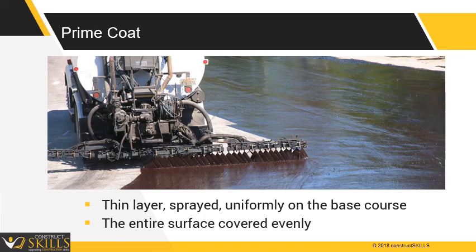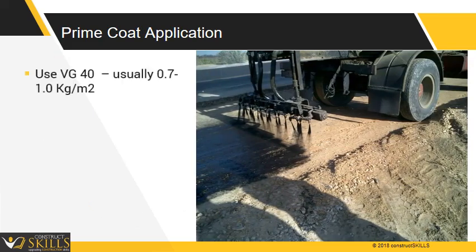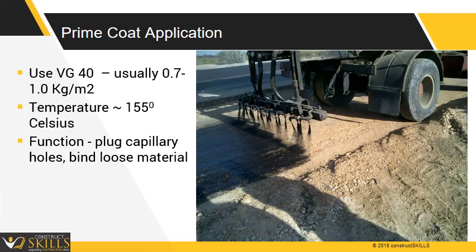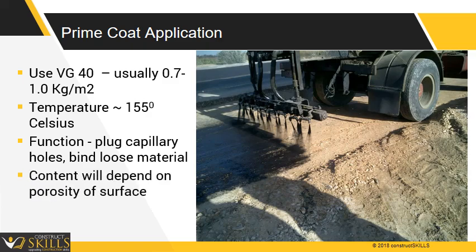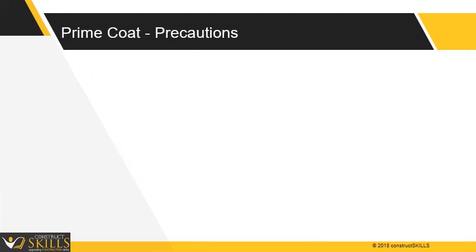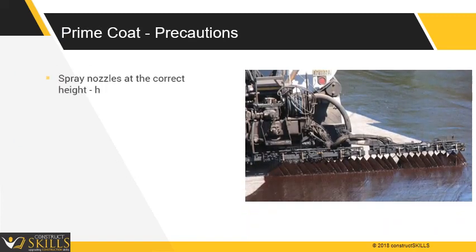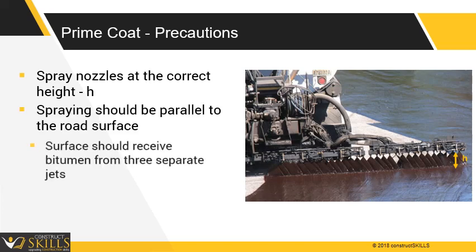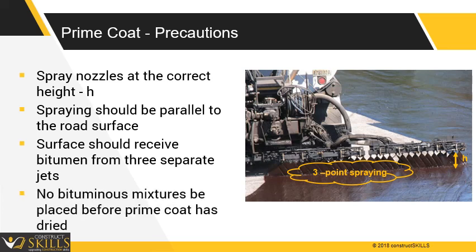The entire surface to be primed must be covered evenly. Ensure working of all spray nozzles. Generally the grade used is VG40, at 0.7 to 1.0 kg per square meter, and the temperature of the mix should be nearly 155 degrees Celsius. The prime coat's function is to plug capillary voids and bind loose material, which overall helps to make the surface water resistant. The content depends upon porosity of the surface. During prime coat application, ensure that the spray nozzles are at the correct height and are parallel to the road surface; each point of the road should be sprayed from three separate jets. No bituminous mixtures should be placed until the prime coat has dried.